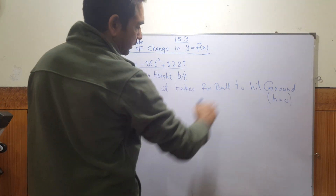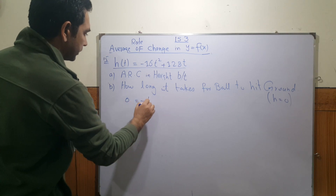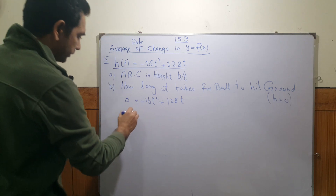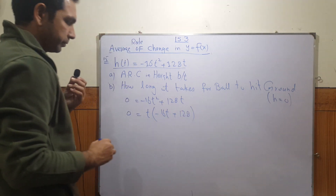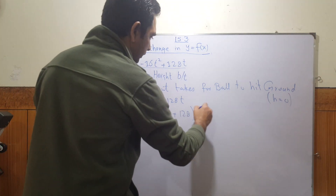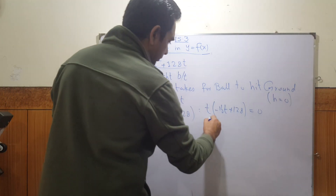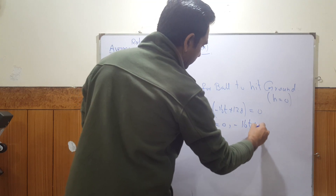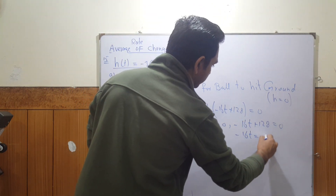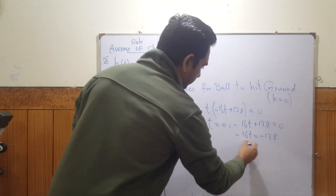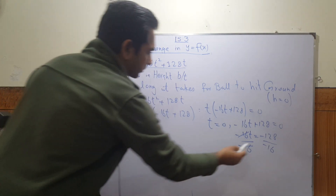In part b, they ask how long it takes for the ball to hit the ground — meaning when is the height 0. Setting h = 0: 0 = -16t² + 128t. We can factor out t: t(-16t + 128) = 0. This means either t = 0 or -16t + 128 = 0.